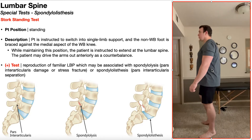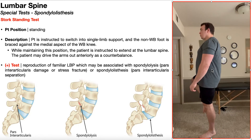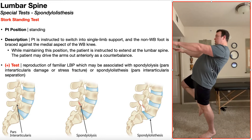Here's a look at this from the side — there's the stork stance and the lumbar extension. A positive stork standing test is indicated by reproduction of familiar low back pain, which can be associated with either a spondylolysis or a spondylolisthesis, both of which involve some kind of damage to the pars interarticularis — a region of the lower lumbar vertebrae where the facets attach to one another.